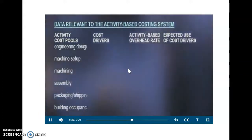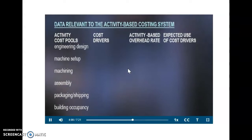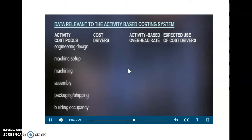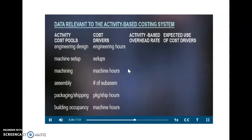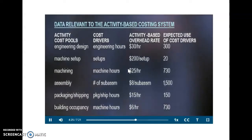Under activity cost pools, we see that there are six: engineering design, machine setup, machining, assembly, packaging and shipping, and building occupancy. Each activity cost pool has a corresponding cost driver. We have overhead rates for each and expected use of cost drivers.